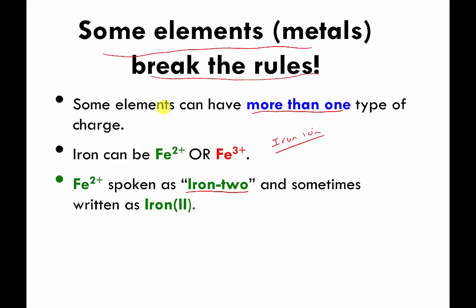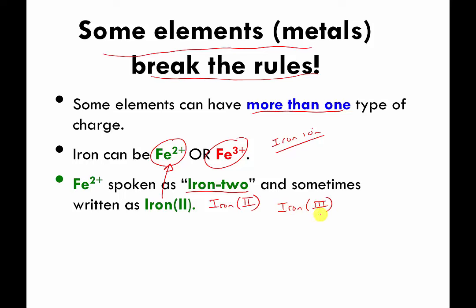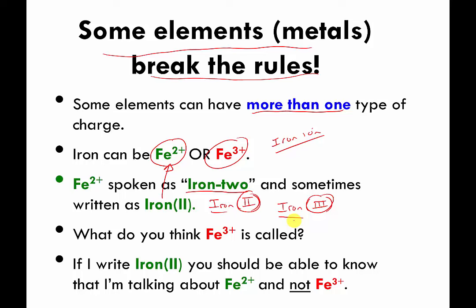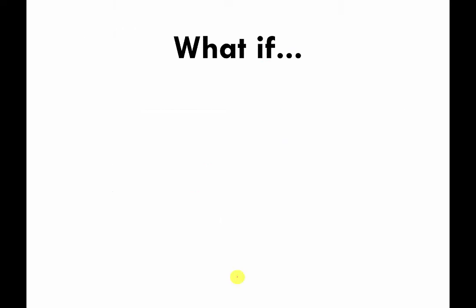There's another way of specifying the charge, and that is to write the name of the element and then in parentheses right next to it write the Roman numeral for whatever charge your atom has. If I'm working with iron charged at plus two, I write the word 'iron' then parentheses with Roman numeral II. If I wanted to describe the plus-three version, I'd write iron with Roman numeral III in parentheses. So if you ever see a Roman numeral next to an element name, that is telling you what the positive charge of that element is.